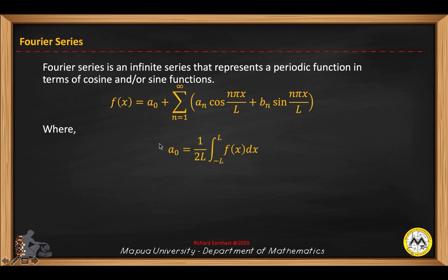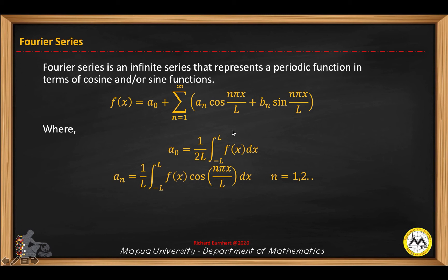Here, a sub o is obtained by the integral 1 over 2l of f of x dx from negative l to positive l. A sub n is 1 over l times the integral from negative l to l of f of x multiplied by cosine of n pi x over l dx, where n starts with 1, 2, 3, and so on.